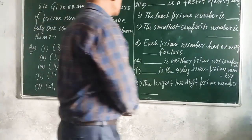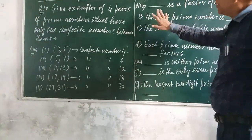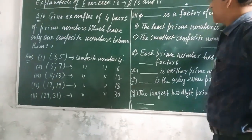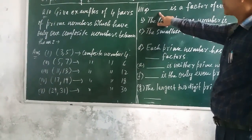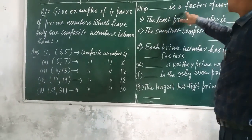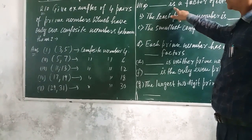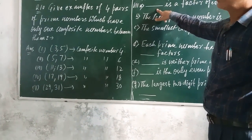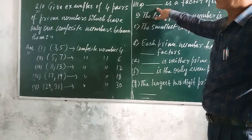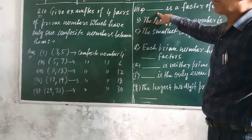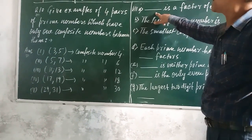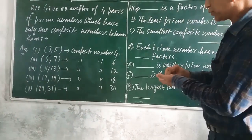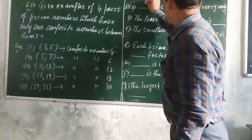Now, comes question number 11. The first question is: Dash is a factor of every number. Your answer will be 1, because 1 is the factor of every number. Why? Because 1 divides every number. So, 1 is the factor of every number. You should fill in 1 here.